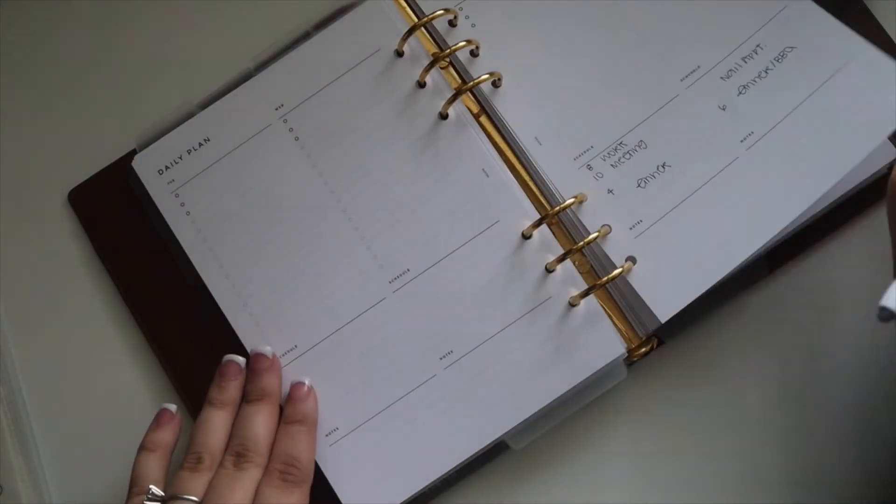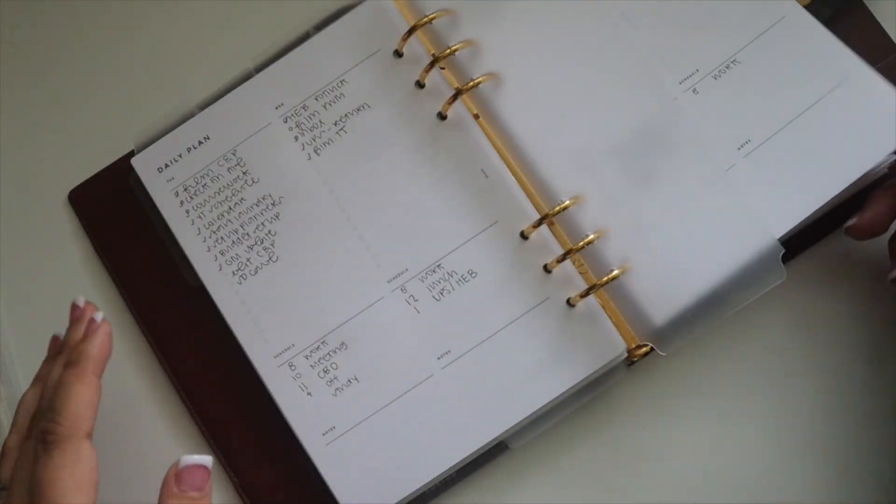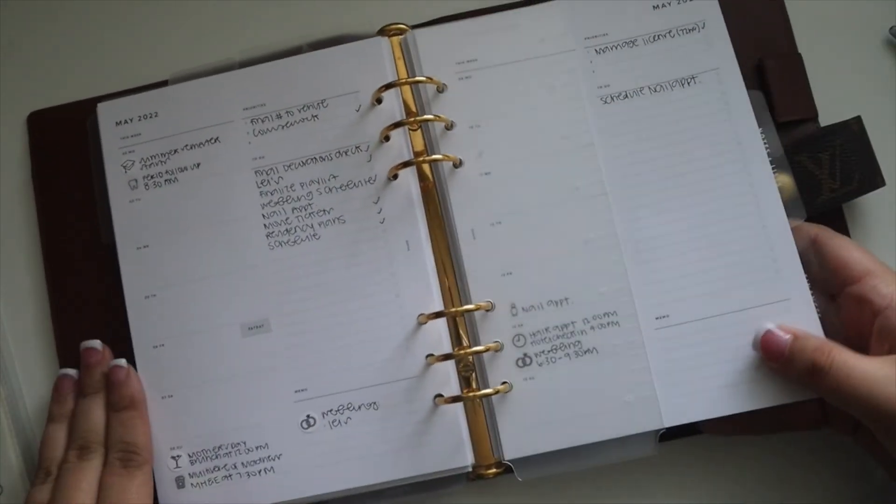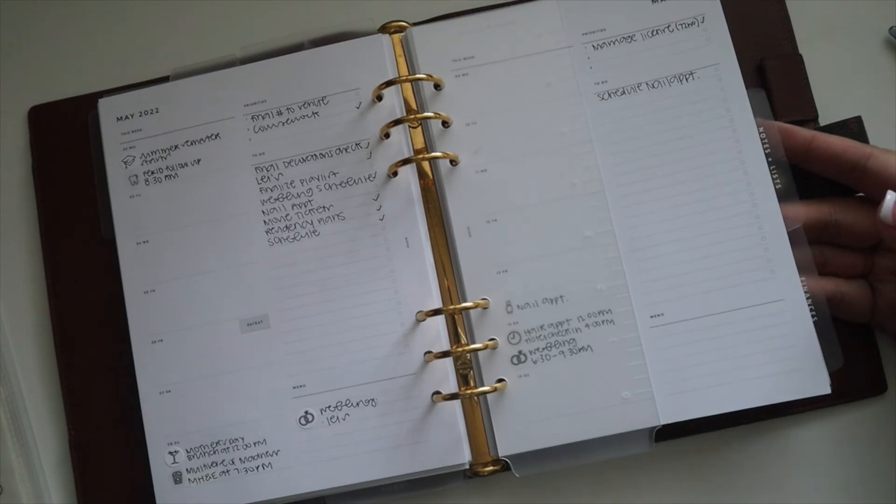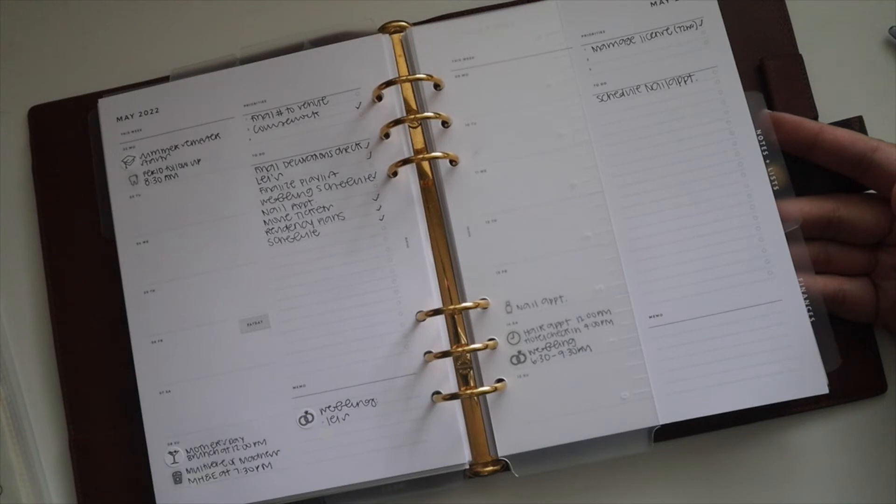I did also want to share, I did make changes. I shared on Instagram the Erin Condren Teacher Lesson Planner is coming out, actually the Monday after the wedding, so the week after this, on the 16th. They came out with a 7 by 9 focused teacher lesson planner, and so I'm actually going to order that for work. I will be using that for work, and I took out the work insert for now just because I wasn't using them.